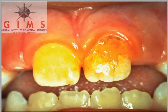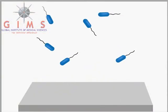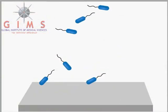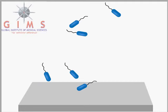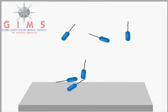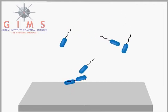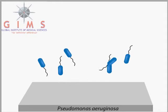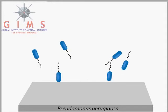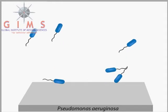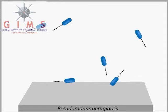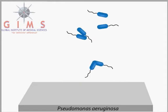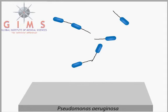Most biofilms in nature are a consortia of several species, but in some situations, single-species biofilms can form. For example, the gram-negative bacterium Pseudomonas aeruginosa can form a single-species biofilm in the lungs of cystic fibrosis patients. Single-species biofilms are also readily formed in the laboratory.